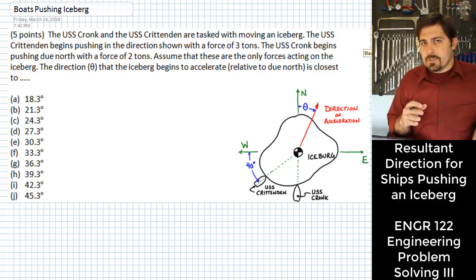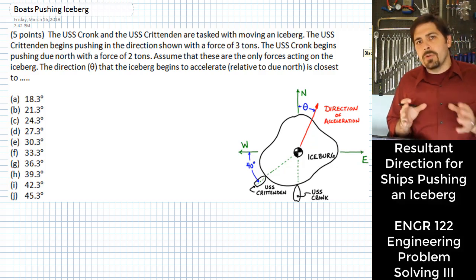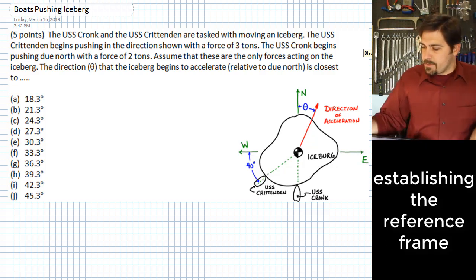The first thing that we need to do is figure out relative to our coordinate system what our components are of the resultant that happens because of these two forces that the boats put on the iceberg.